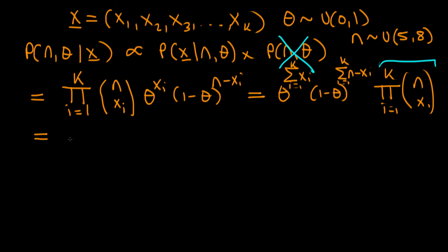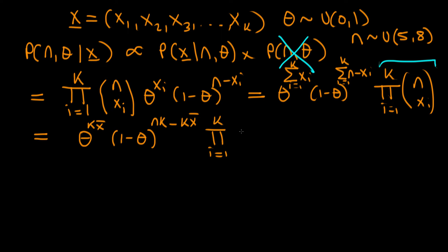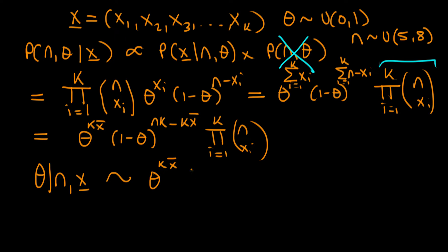The product term doesn't have an obvious simplification, but that doesn't matter here. We can simplify the theta terms further using the sample average x-bar: we get theta to the power k times x-bar, times one minus theta to the power n·k minus k·x-bar, times the product of binomial coefficients from i equals one to k. This is our joint density up to a constant of proportionality. To find the conditional density of theta given n and x, we remove all terms not containing theta, leaving theta to the power k·x-bar times one minus theta to the power n·k minus k·x-bar. We recognize this as the form of a beta density.